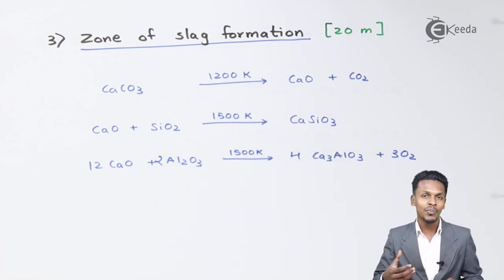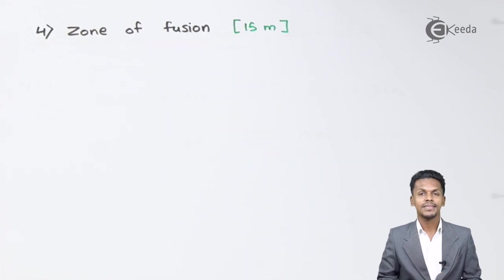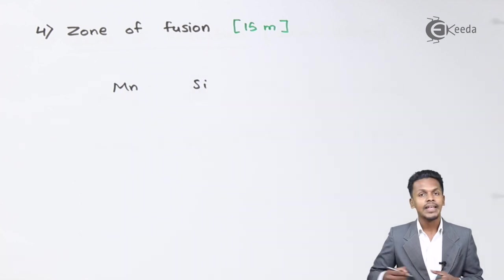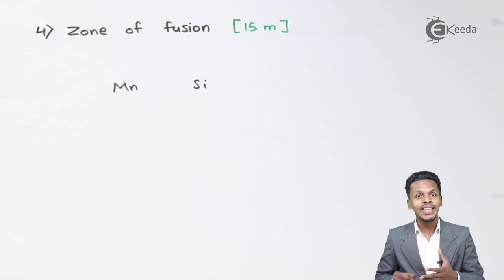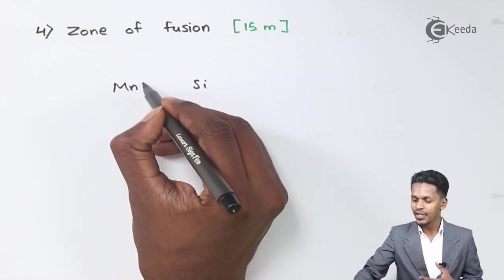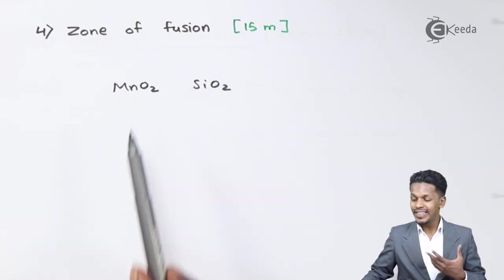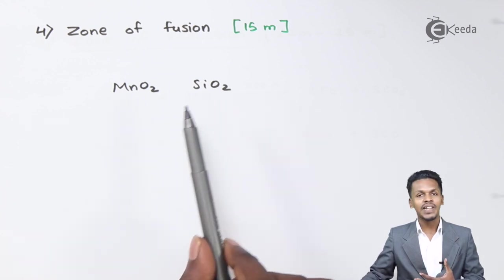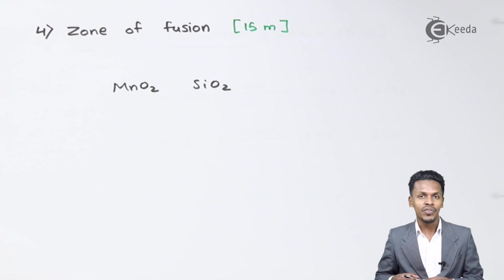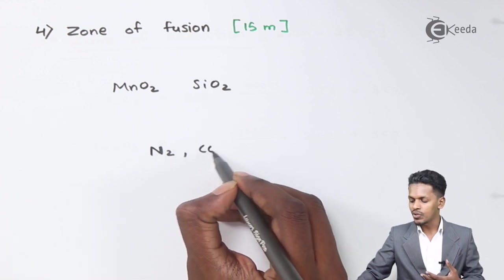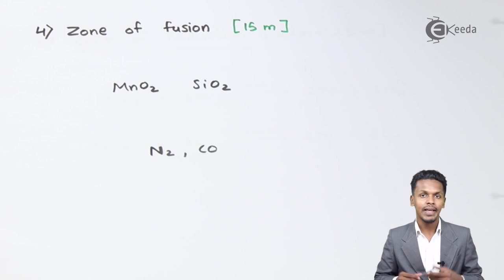In the zone of fusion, other impurities such as manganese and silicon are present. Oxygen reacts with manganese to form MnO2, and with silicon to form SiO2. These are oxidized and removed as impurities. Gases like N2 and carbon monoxide are removed from the upper part of the blast furnace.